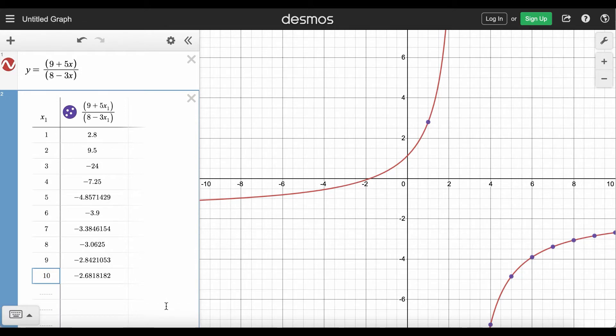But let's say that I wanted to start this table at 10 and increase the input values by increments of 10 until I get to 100. So I'm just going to start all over, it's kind of the fastest way.